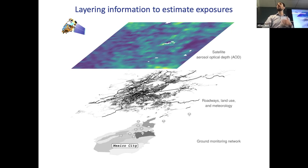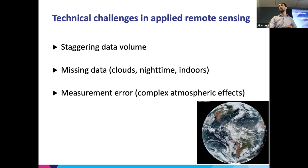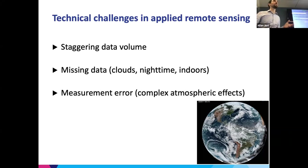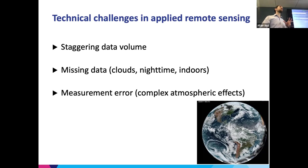We're combining this kind of information using a geostatistical framework, which means we're learning relationships where we have ground data so that we can try to infer using predictive modeling what's happening where we do not have ground data. Some of the technical challenges are that these data sources include just staggering data volumes. NASA has this sort of planetary mission — they're producing data sets that go around the world in sometimes esoteric formats, and there's just an enormous amount of it.